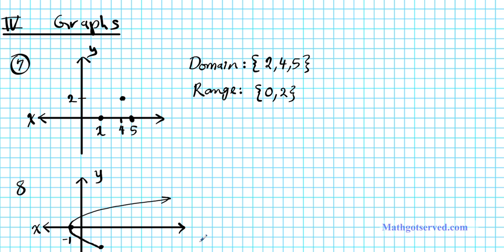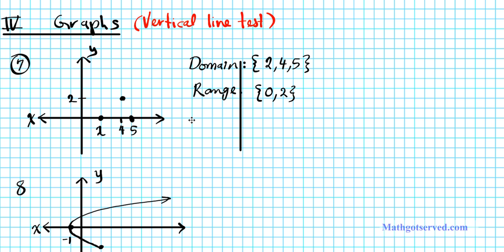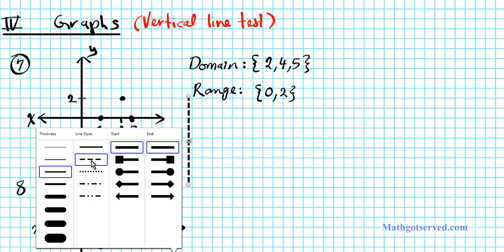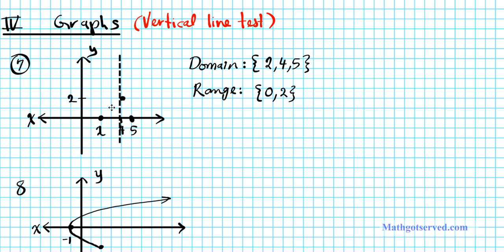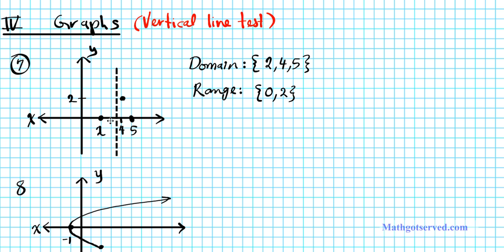The strategy for determining if a graph is a function or not is known as the vertical line test. All you do is draw a vertical line and sweep across the domain of your graph. If you have more than one intersection at any point, that disqualifies the graph from being a function. At x=2, there's only one point the vertical line intersects; at x=4, only one; at x=5, only one. So this passes the vertical line test — this relation is a function.